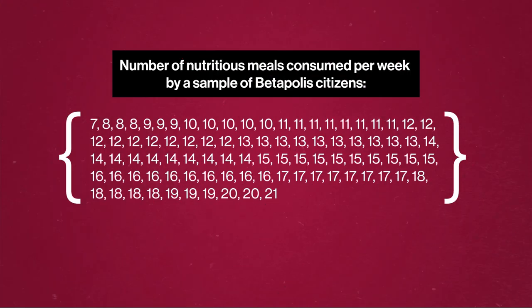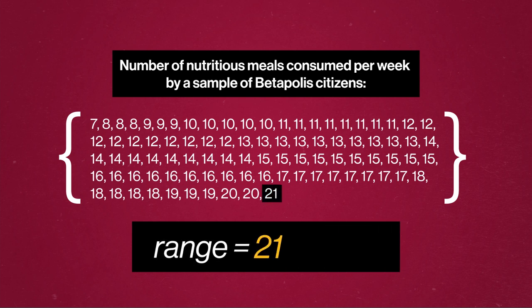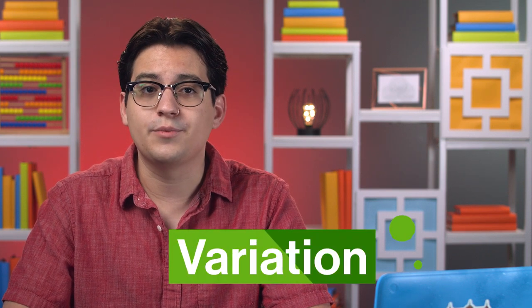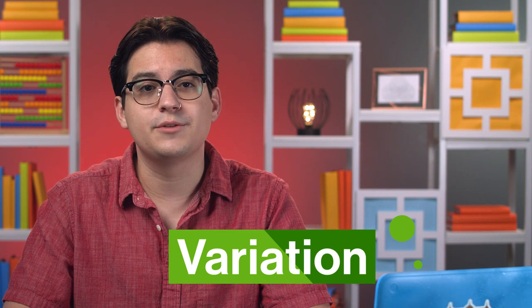In Betaopolis, meanwhile, the data is much tighter, and the range for the Betaopolis data set would be 21 minus 7, which is 14. So Alphaville's data spans a wider range of numbers than Betaopolis. The difference between these ranges for each city is the first clue there's more variation in distribution in Alphaville than in Betaopolis, when it comes to the number of nutritious meals people get.